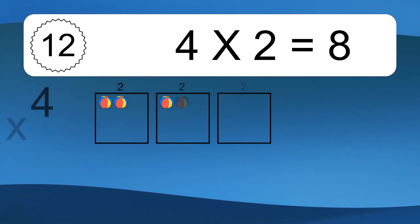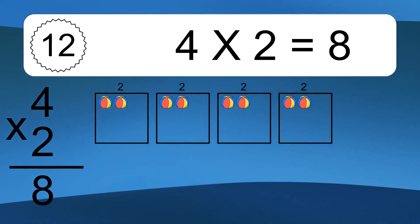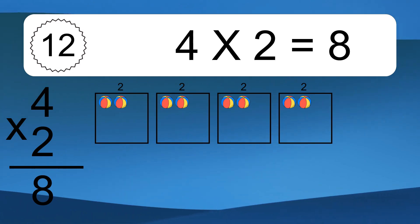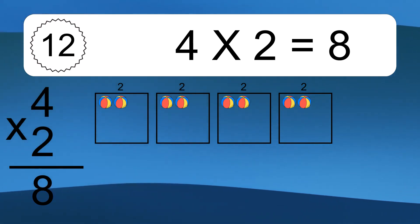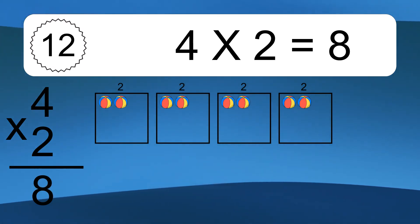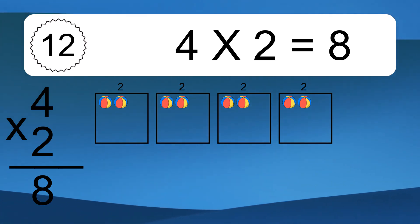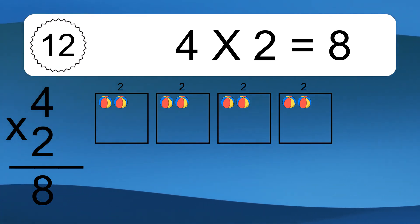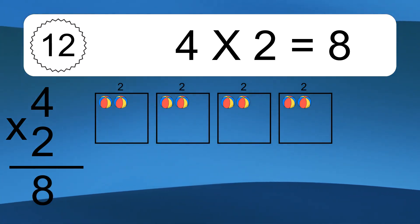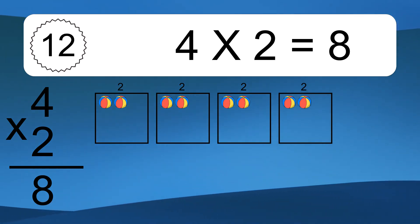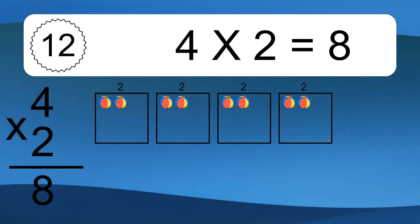Four times two equals eight. We have four boxes, and each box has two colorful balls inside. If you count all the balls in all the boxes together, you will have four times two balls. This equals eight balls.